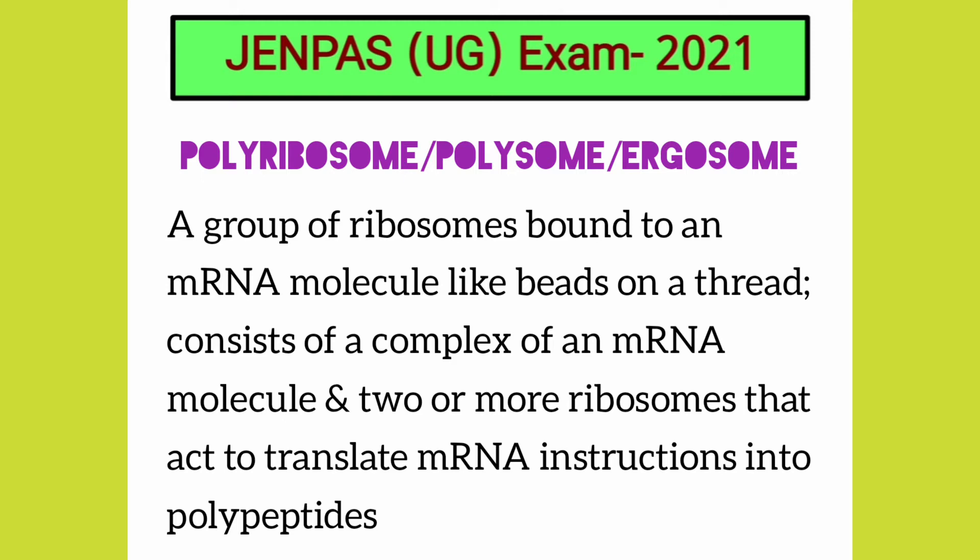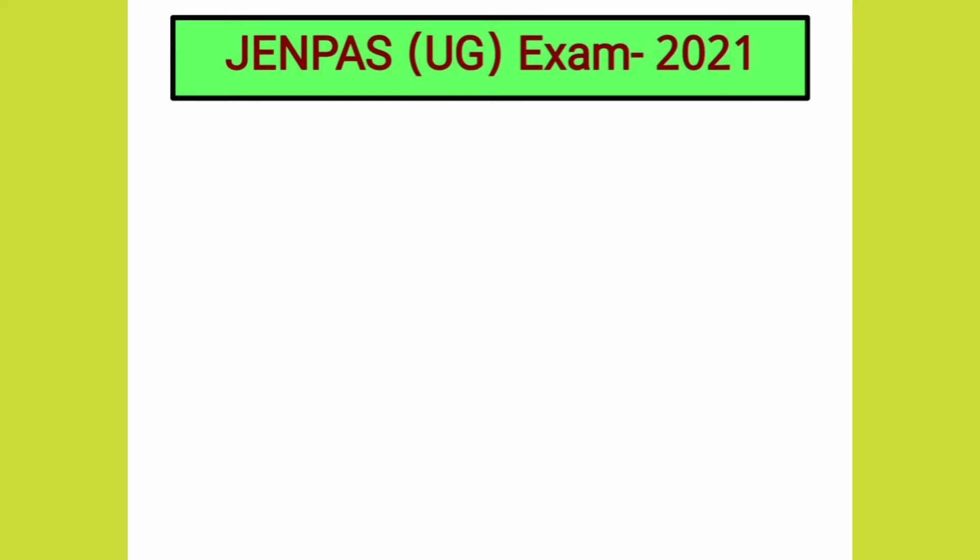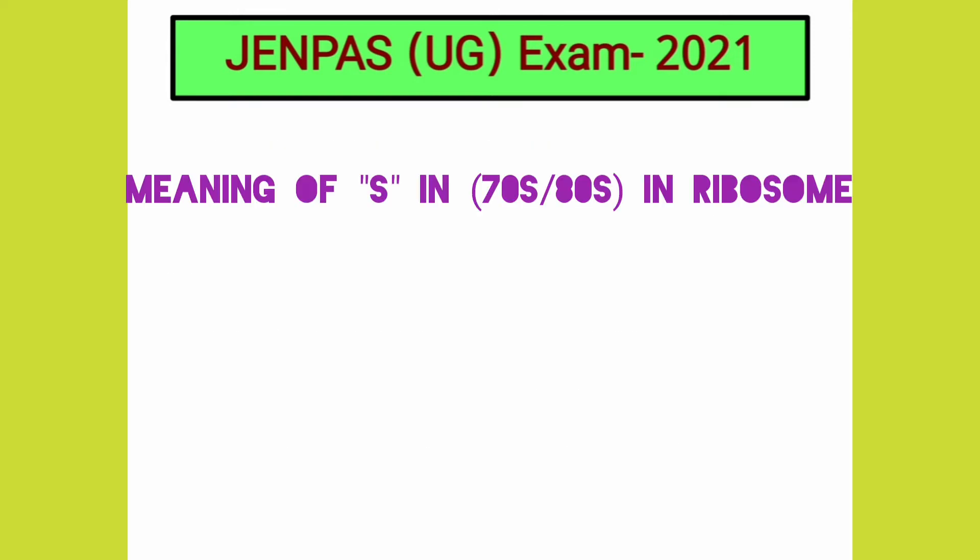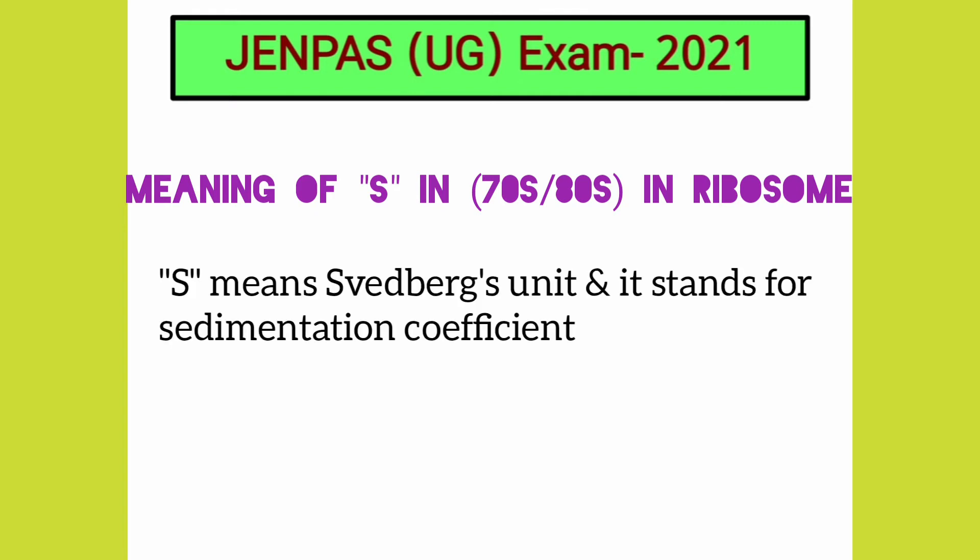What does S refer to in a 70S and an 80S ribosome? The letter S stands for the Svedberg unit, and it represents the sedimentation coefficient in ribosomes.